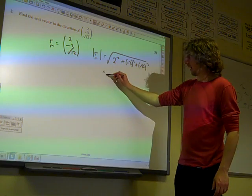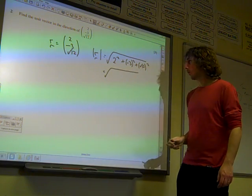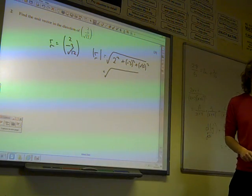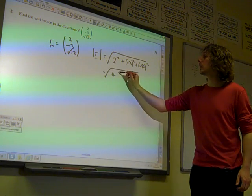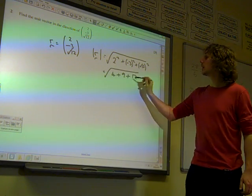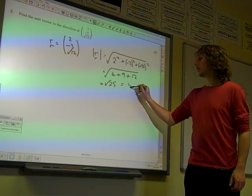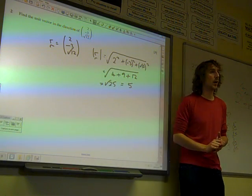Which is, being careful a little bit of the square root in there, we've got 4 plus 9, which is 13, plus 12. So the length of that vector is 5.